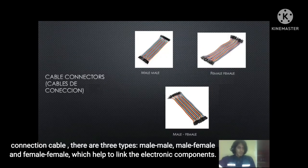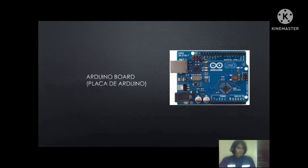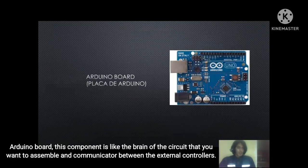Connection cables: there are three types — male-to-male, male-to-female, and female-to-female — which help to link the electronic components. Arduino board: considered the brain of the circuit you want to assemble, it communicates between the external controllers.